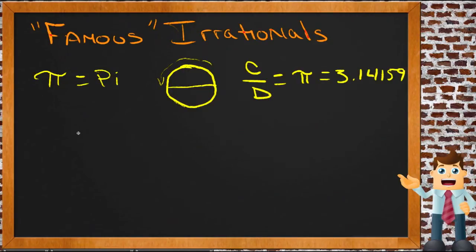Now other famous irrational numbers include the golden ratio. The golden ratio is a really cool number actually.